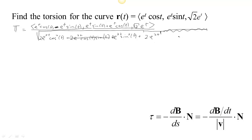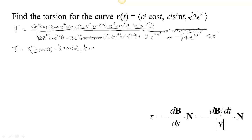That wasn't so bad. In fact, 2e^(2t) cos²t plus 2e^(2t) sin²t is just 2e^(2t), plus another 2e^(2t). This whole thing is the square root of 4e^(2t), which is just 2e^t. So now we have our unit tangent. Writing it more compactly, dividing by 2e^t, we have (1/2)cos t − (1/2)sin t, then (1/2)sin t + (1/2)cos t, and dividing the last component by 2e^t gives us √2/2.